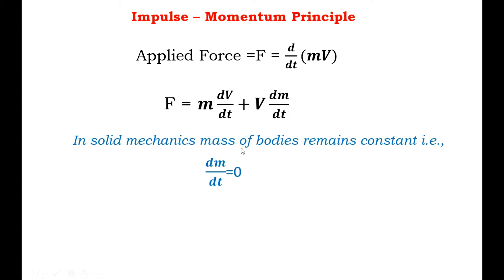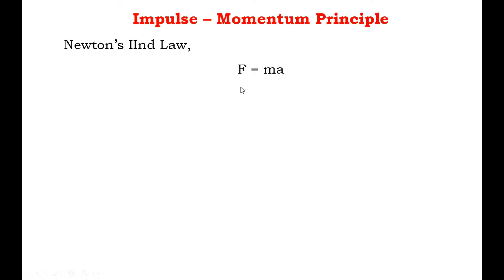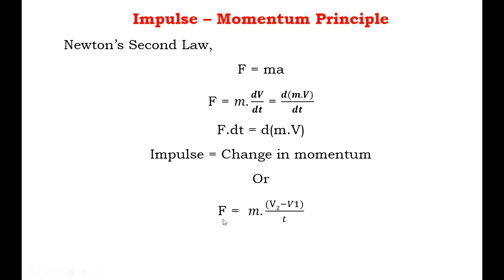In solid mechanics, the mass of a body remains constant, that is dM/dt is equal to zero. Substituting dM/dt = 0 into the equation we get F equal to M·(dV/dt). Since dV/dt is acceleration, we get F equals mass into acceleration, that is F = MA. This is Newton's second law. Further simplifying, we get F·dt equal to d(M·V), that is impulse equals change in momentum.